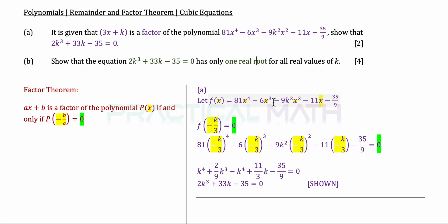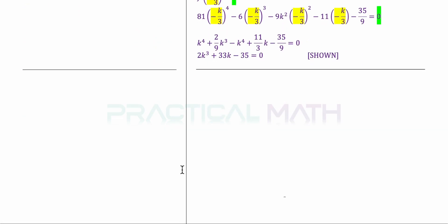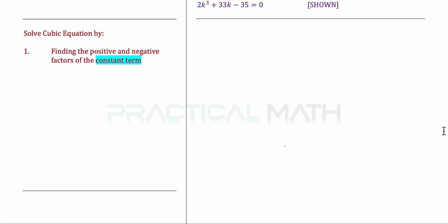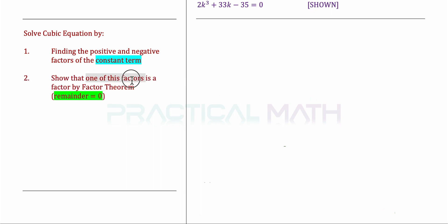Before we start on the solution, let's go over the steps to solving cubic equations. Step 1: find the positive and negative factors of the constant term — similar to solving a quadratic by cross-factorization. Step 2: show that one of these factors is a factor by the factor theorem — that is, the remainder must equal zero.